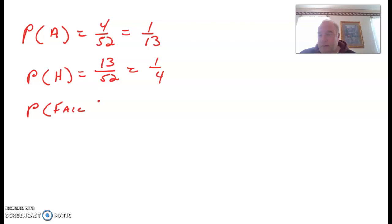Probability of picking a face card. Well, there are 3 face cards, Jack, Queen, King, in each suit. So that's 4 times 3, which is 12, out of 52, which reduces to 3 out of 13.